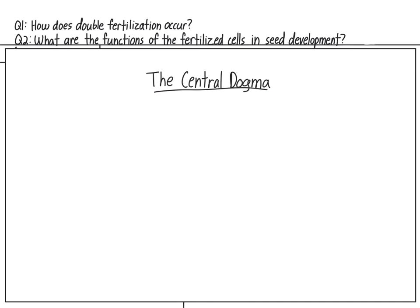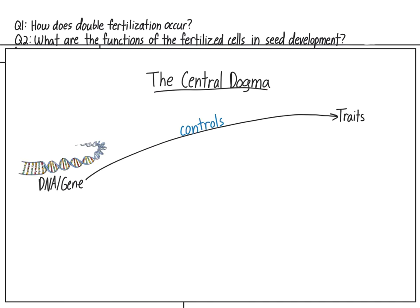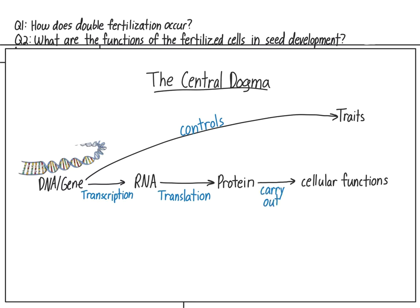The central dogma essentially explains how DNA controls traits. A copy of DNA is made through transcription, producing RNA, which then undergoes translation, yielding protein. Proteins are the molecules that actually carry out most cellular functions — for example, the production of the pigment melanin, which is the molecule that gives our hair its color. To what extent these functions are carried out controls a person's traits, for example hair color. A person that produces lots of melanin will have darker hair, and a person that produces less will have lighter hair.